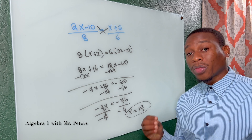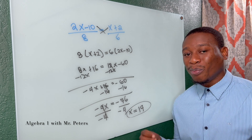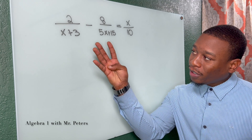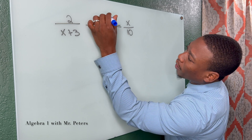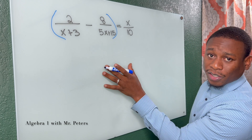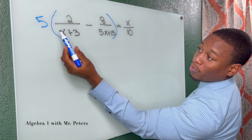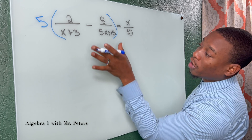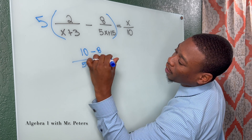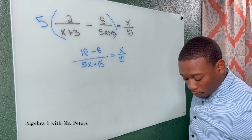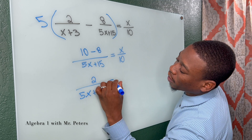So cross multiplication is a much easier method for solving rational equations compared to the common denominator. Now in the last problem we're going to look at a more complicated case — three different fractions. Students sometimes get confused, but rather than finding a common denominator for all three terms, we can focus on two of the fractions and combine them first. This fraction is just missing a factor of 5, so multiplying by 5 gives us 5x plus 15 in the denominator, giving us 10 minus 8 all over 5x plus 15, which equals x over 10.